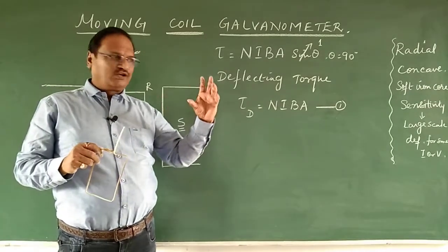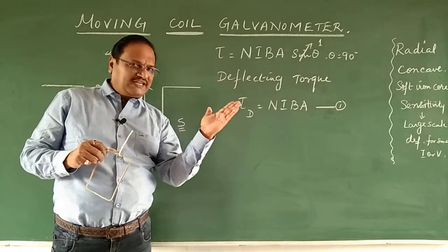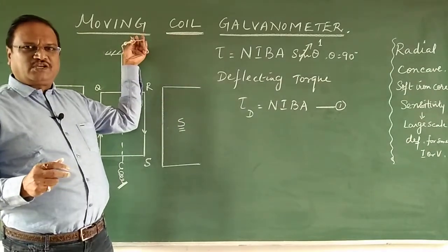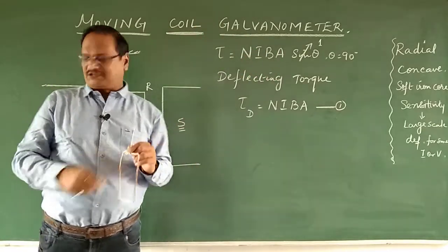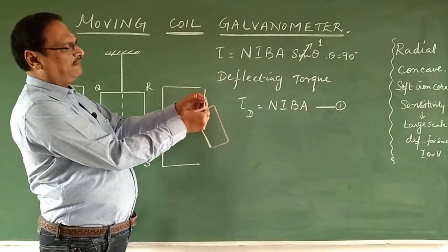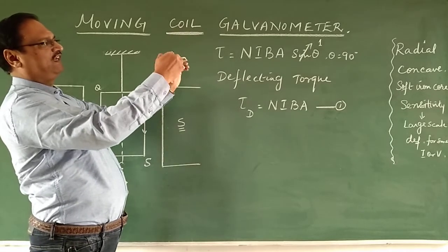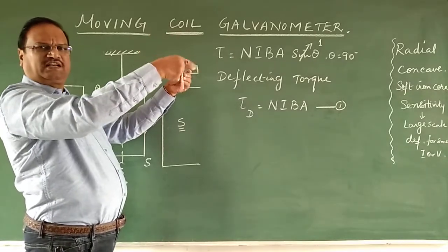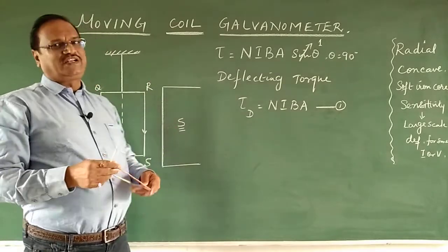Like in a bike or car you have a speedometer where the reading increases or decreases with speed, here the coil is moving — that is why it is called a moving coil galvanometer. Let me show you: I have suspended a coil, and as the coil rotates, the pointer also rotates.